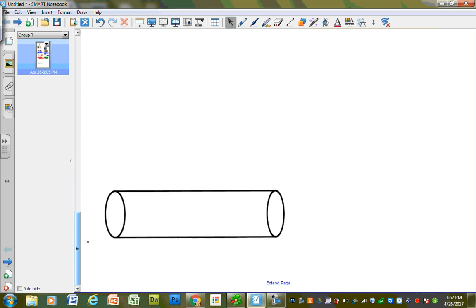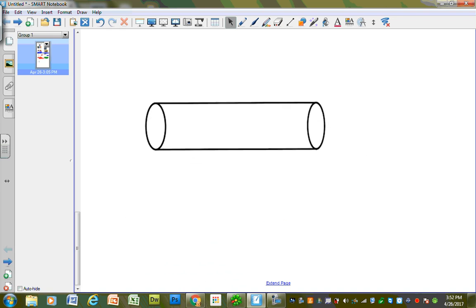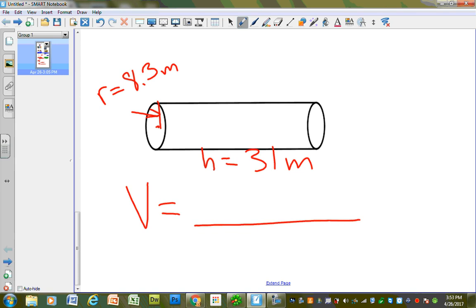I'm going to give you one more. Here's my cylinder with a radius of 8.3 meters and a height of 31 meters. I want you to find the volume for that. Write out the numbers, the answer, and have it labeled. You need all three of those things, or you won't get full credit for your notes.